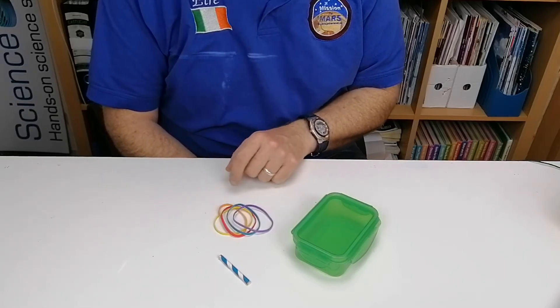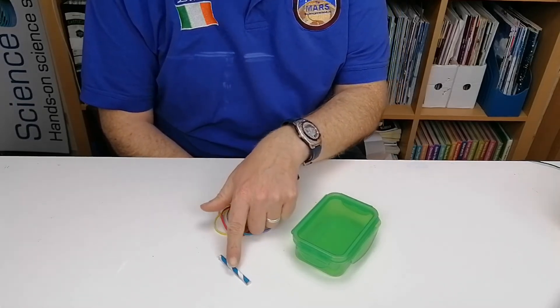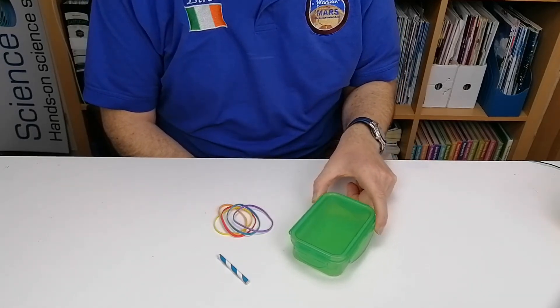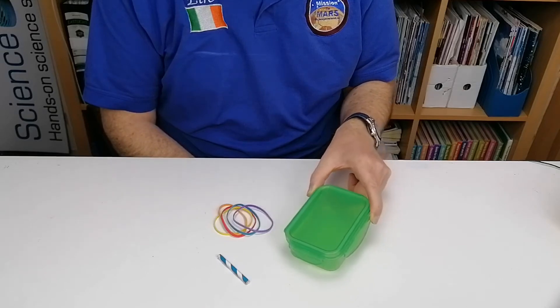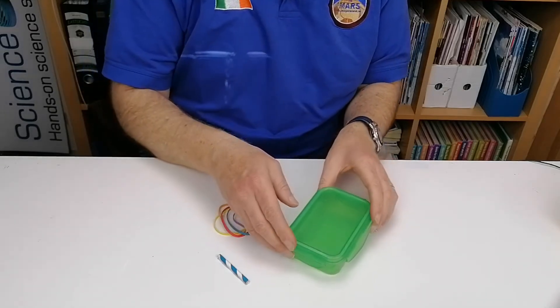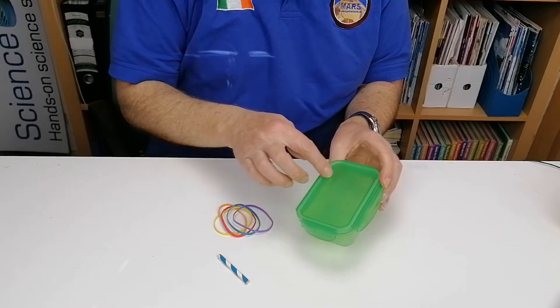So that's what you need. You just need some elastic bands, you can have them thinner or thicker. You can have a straw, it's a small section of a straw, and I'm going to use a little food container here. You can use a small glass if you like, but if you're going to use a glass you need to have a kind of a rim around it.